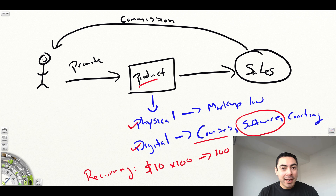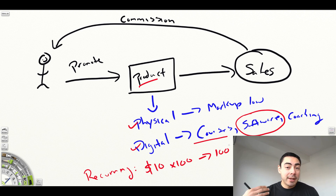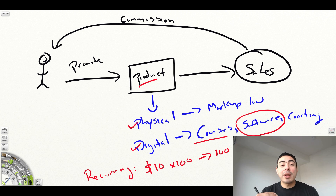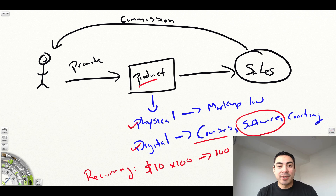Depending on your financial goal — whether it's quitting your full-time job to focus on your online career — something with recurring income might make more sense. Or if you want to make bigger one-off sales, focusing on a digital product might be better. If you're okay with smaller commissions and less overhead, then a physical product might make the most sense. You've got to figure that out and balance it.